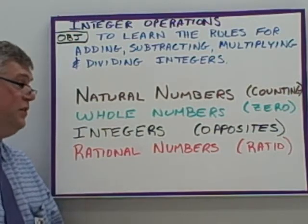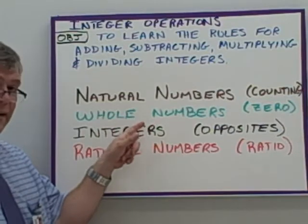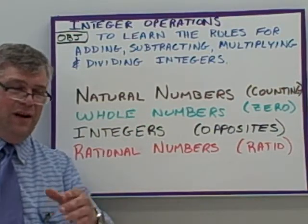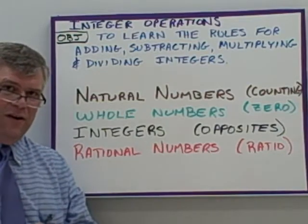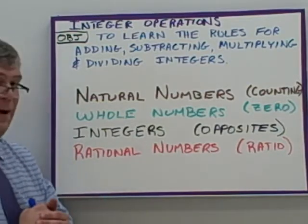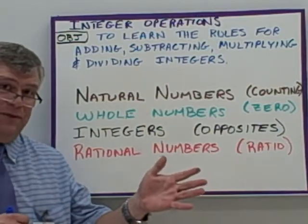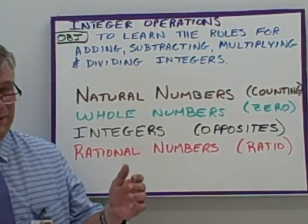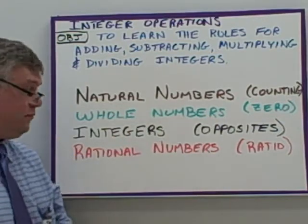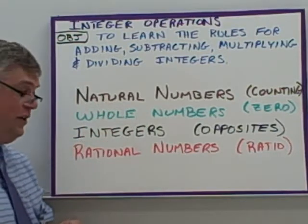Integers. Integers are all the natural numbers and their opposites. An opposite is a number that's the same distance from zero on the number line but in the opposite direction. So the opposite of five would be negative five, and the opposite of negative 2,000 would be positive 2,000. It also includes zero. So all natural numbers are whole numbers, and all whole numbers are integers.